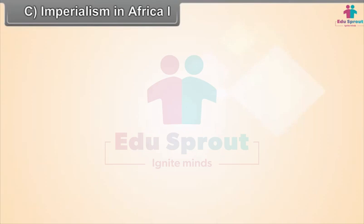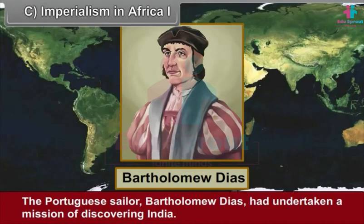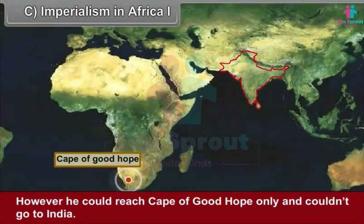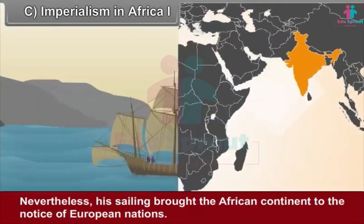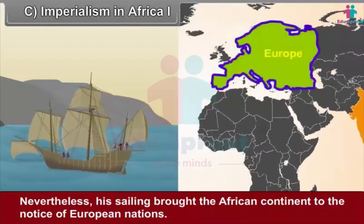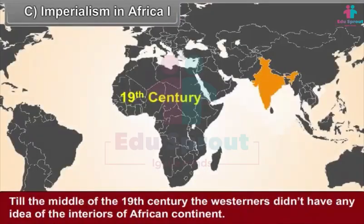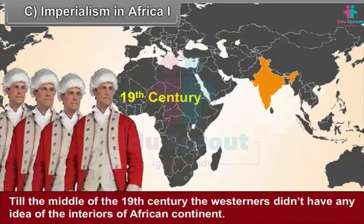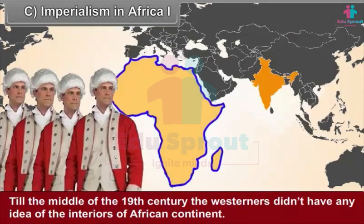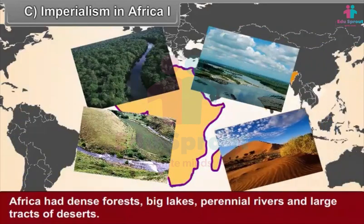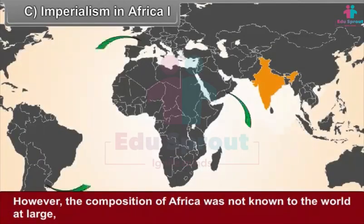Imperialism in Africa. The Portuguese sailor Bartholomew Dias had undertaken a mission of discovering India. However, he could only reach the Cape of Good Hope and couldn't go to India. Nevertheless, his sailing brought the African continent to the notice of European nations. The trade of slaves carried on by Europeans brought European nations into association with the coastal regions of Africa. Till the middle of the 19th century, the Westerners didn't have any idea of the interiors of the African continent. Africa had dense forests, big lakes, perennial rivers and large tracts of deserts. However, the composition of Africa was not known to the world at large.